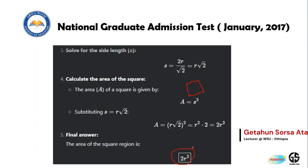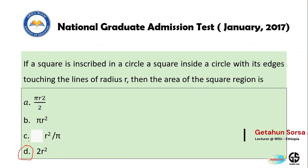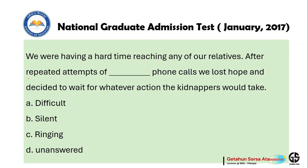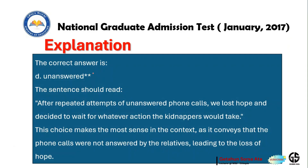Next, this is a verbal part. We were having a hard time reaching any of our relatives, and after repeated attempts of ___ phone calls, we lost hope and decided to wait for whatever action the kidnappers would take. Options: a) difficult, b) silent, c) ringing, d) unanswered. The correct answer is 'unanswered' — the sentence reads: after repeated attempts of unanswered phone calls, we lost hope. This choice makes the most sense as it conveys the calls were not answered by the relatives.